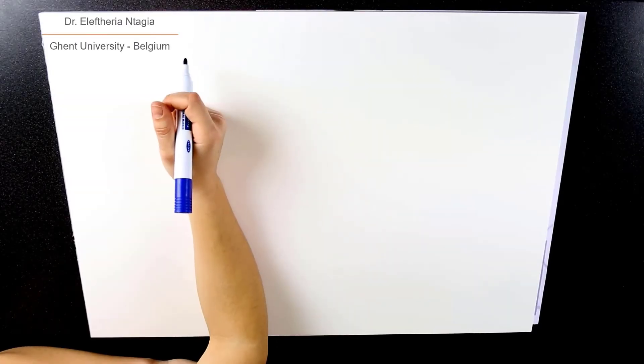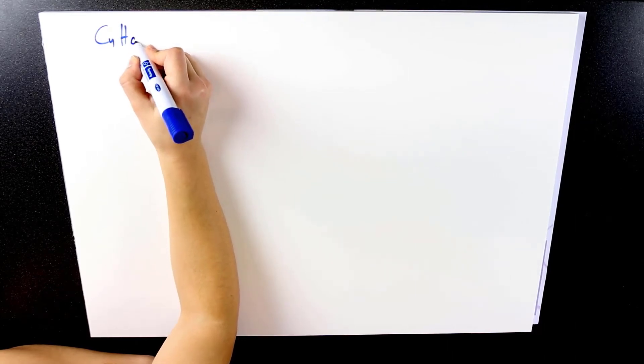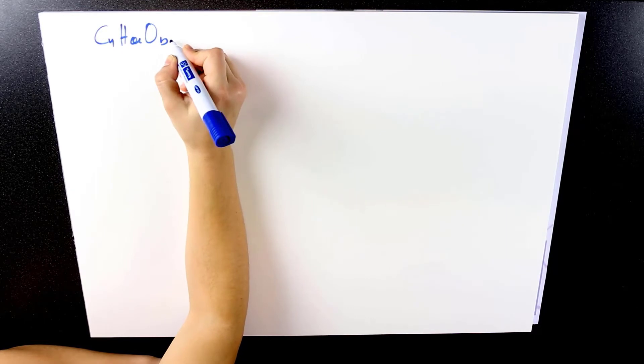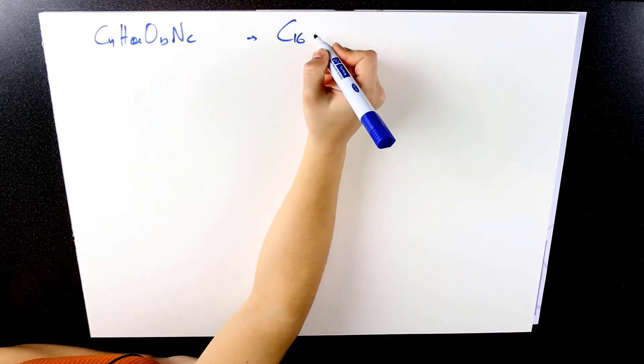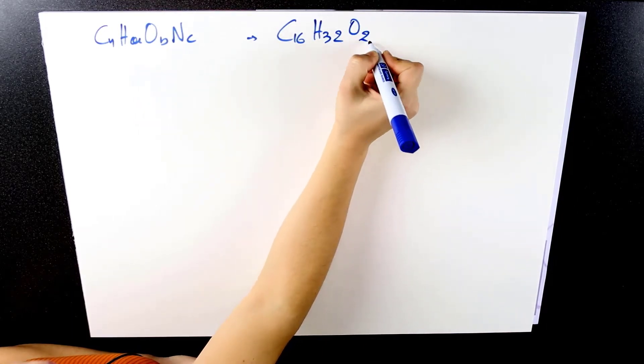This example solves the Buswell equation for the production of biogas from palmitic acid. In the Buswell equation, organic compounds are given with a general formula containing N atoms of carbon, A atoms of hydrogen, B atoms of oxygen, and C of nitrogen. Palmitic acid has 16 atoms of carbon, 32 hydrogen, and 2 of oxygen.